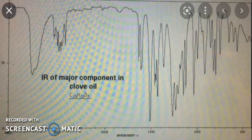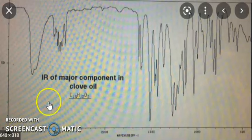You know there are two oxygens and 12 hydrogens and 10 carbons. So this is the structure of IR spectra of eugenol.